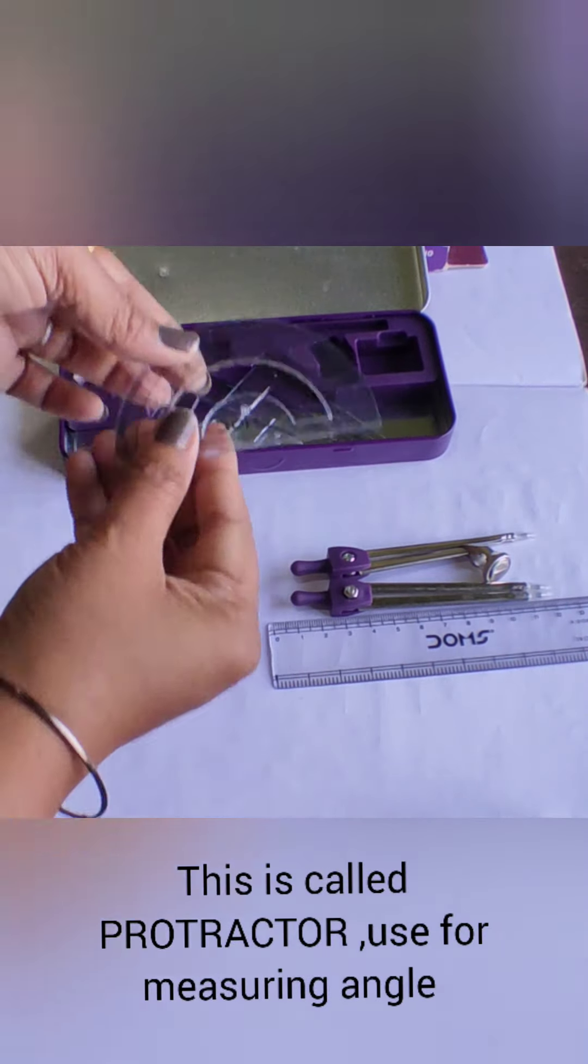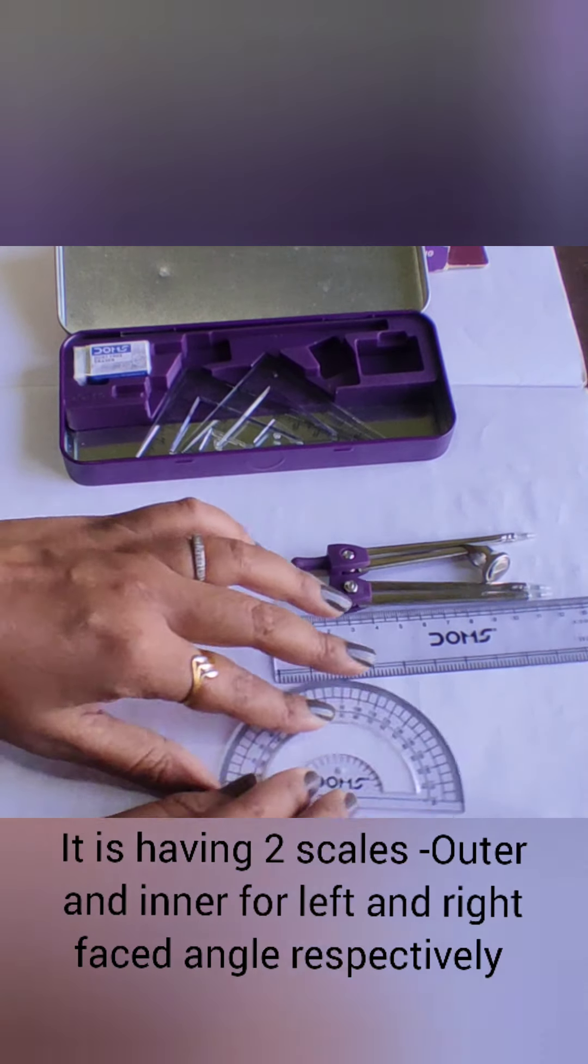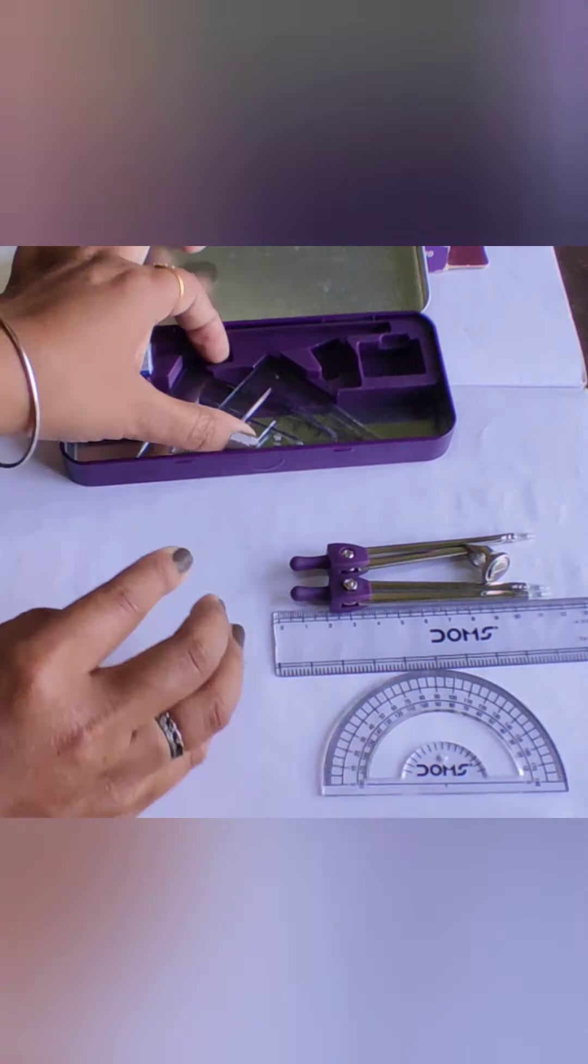This is called protractor, used for measuring angles. And we all know it has two scales, outer and inner, for the left and right facing angle respectively.